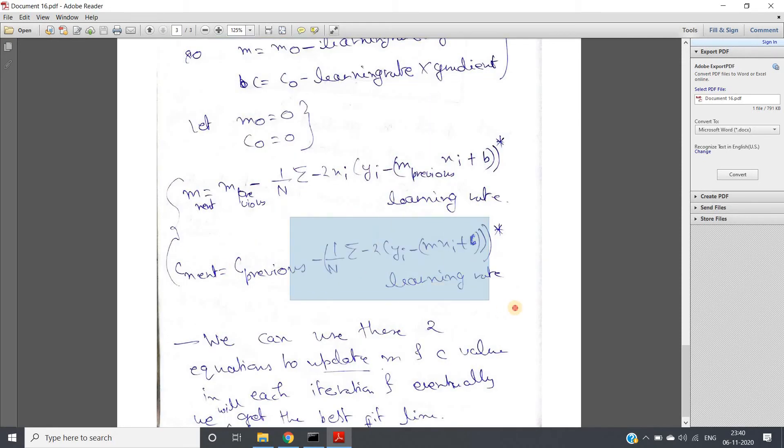And c was updated like this. For c it is not at all a problem whether you are doing feature scaling or not. But if you observe for m, here we have multiplied xi. Suppose you have not applied feature scaling and your xi value is very large. That time this particular overall term might become a big value because you are multiplying that with xi each time.